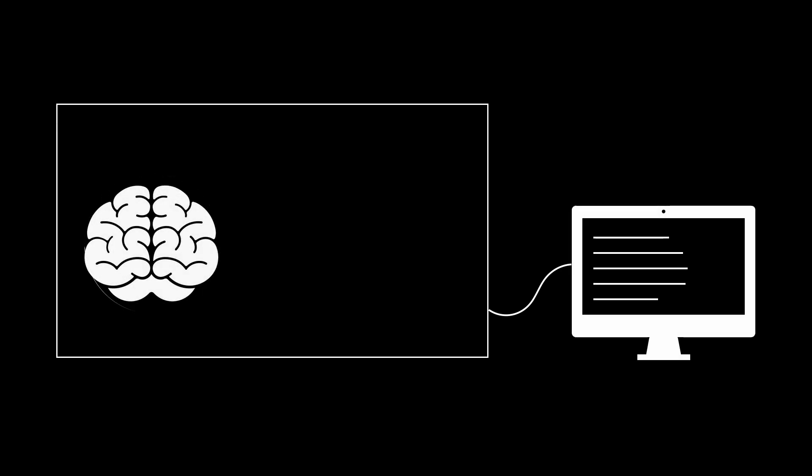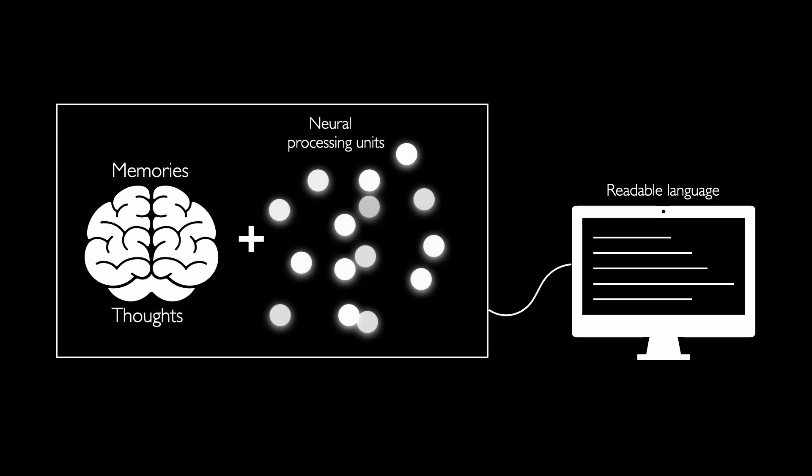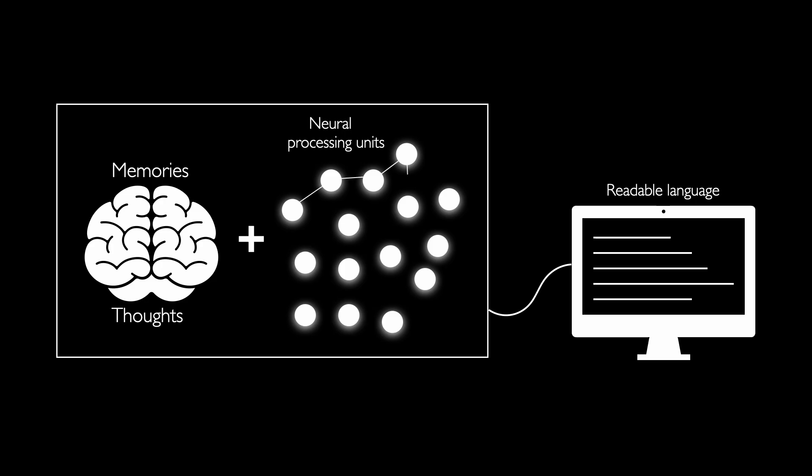Neural processing units, if you didn't know, basically accelerate machine learning algorithms. And in this case, they can act more like the brain's personal translators. They can take the incredibly complex language of your thoughts and memories and turn it into something a computer can understand.